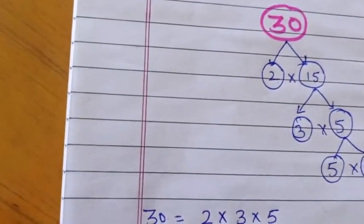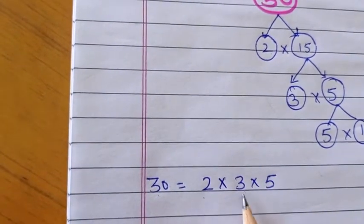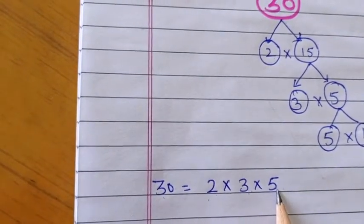These are 30. 30 is how can we write? 2 multiplied by 3 by 5. 2 × 3 is 6. 6 × 5 is 30.